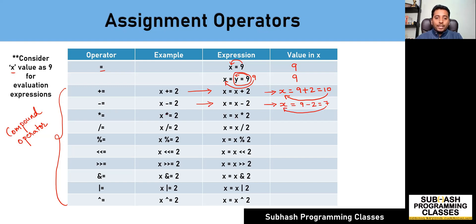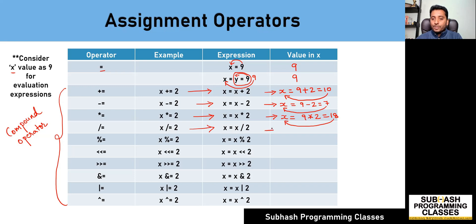Similarly, when I say x multiplication equal-to 2, this is considered as x is equal to x multiplied by 2, resulting in x is equal to 9 multiplied by 2, which is 18, and 18 gets stored into x. When I say x division equal-to 2, this is x is equal to x divided by 2, which is 9 divided by 2, resulting in 4, and 4 gets stored into x. When I say x modulo equal-to 2, this is x is equal to 9 modulo 2, which results in 1, and 1 gets stored into x.